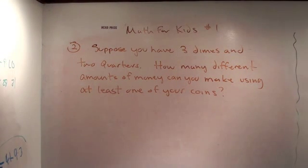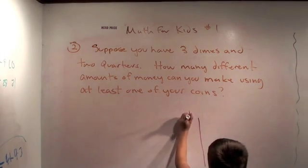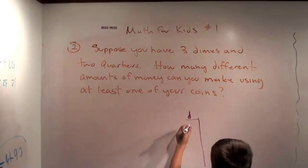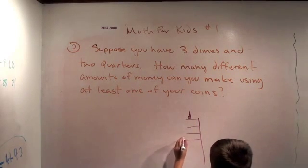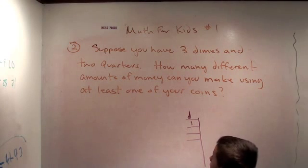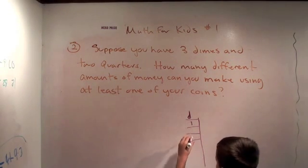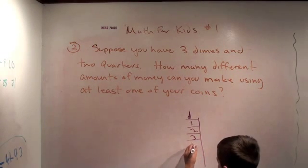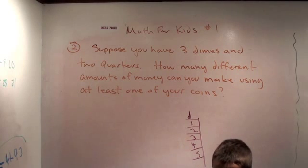Well, we have three dimes and two quarters. Okay. And we need to find out how many different amounts of money we can make using at least one of the coins. At least one of the coins. Yeah. Okay. Well, how do you want to start? I'm going to make a dimes column. Okay. I'm just going to write D for dimes. Make a chart just for the dimes. That's the first step on a problem like this. Oh, just for the dimes? Yeah.